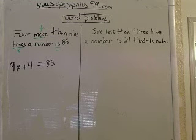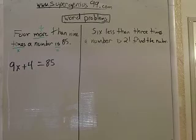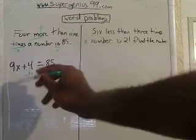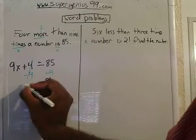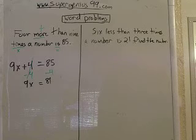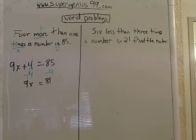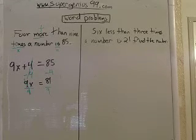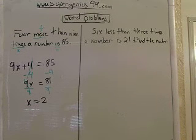Now what do we need to do to solve this? When you're trying to solve for x, your goal is to get x by itself. So the first thing I need to do is subtract four from both sides. Four minus four is zero, so that's gone. Now what's 85 minus four? 81. Now we have nine x equals 81. What do I need to do to get x by itself? You do the opposite operation — the opposite of multiplication is division. You divide both sides by nine. Nine x divided by nine, the nines cancel, and you just have x on your left-hand side. And then 81 divided by nine is nine. So your answer is nine.